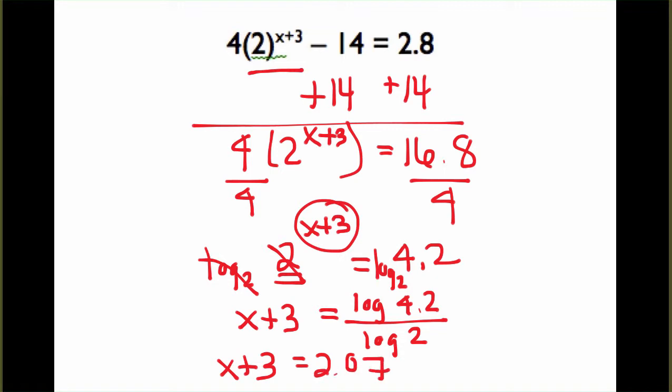And the final step is just to solve like we would normally solve for x. So, if we subtract 3 from each side of the equation, our final answer would be x is equal to negative 0.93.